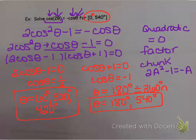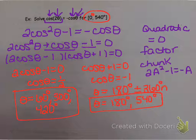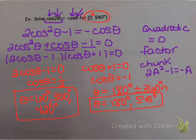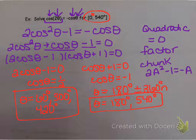Those are the only types we do for double angles in our classes for now - picture drawing to evaluate and solving. We'll do our proofs later. It's just more of the same: new methods and new types of problems we can solve and picture draw to evaluate.